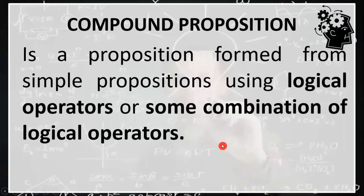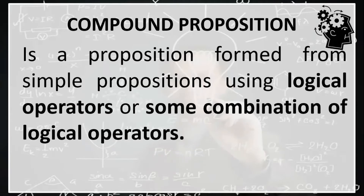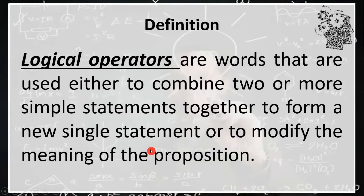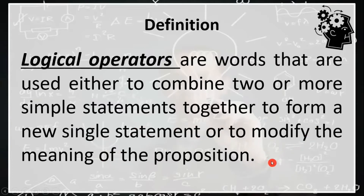Compound proposition is a proposition formed from simple propositions using logical operators or some combination of logical operators. In compound propositions, this contains two or more simple propositions that are put together using logical connective words or logical operators. Logical operators are words used either to combine two or more simple statements together to form a new single statement, or to modify the meaning of the proposition.